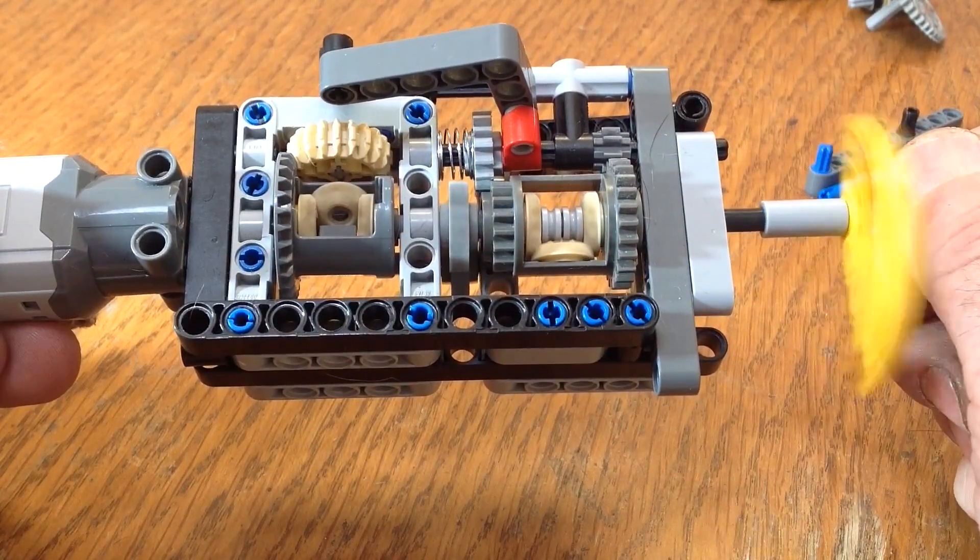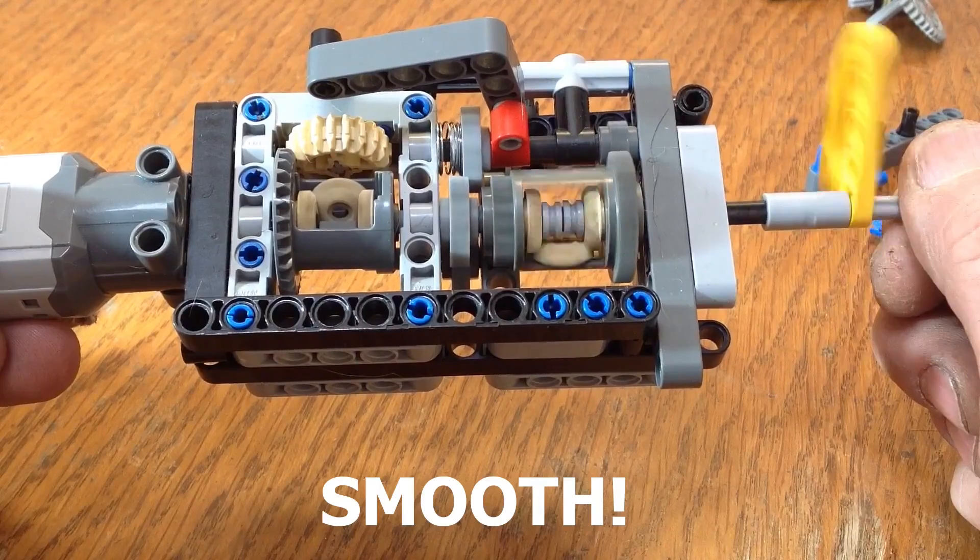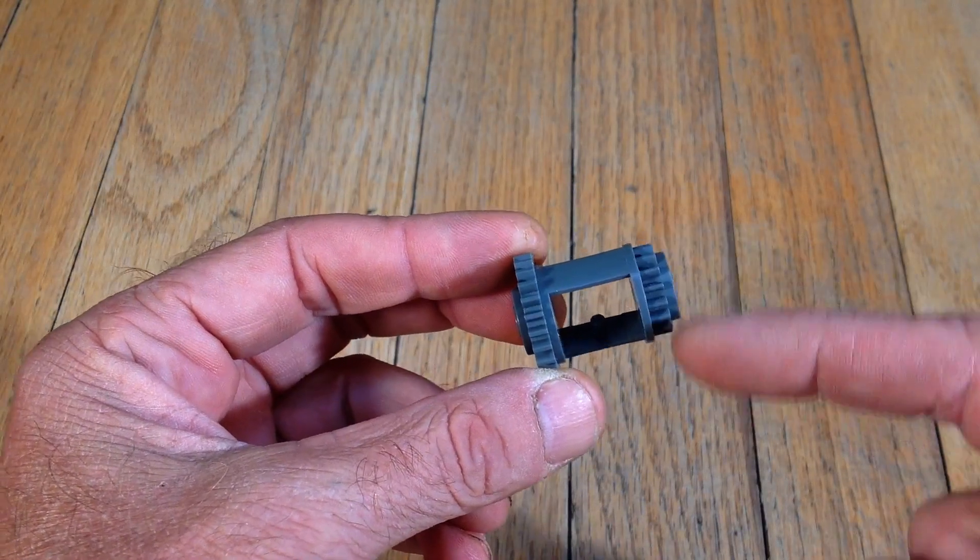On the first one, the gear switching happened off of an old LEGO differential. The biggest reason I did that was because I wanted to use the odd extra gear on the end, but it turned out that it shifted really smoothly.